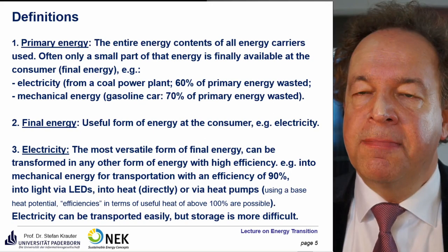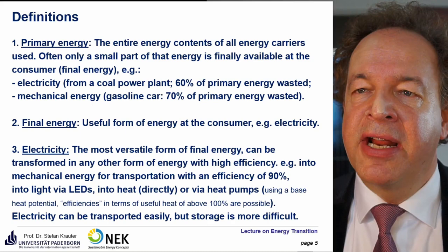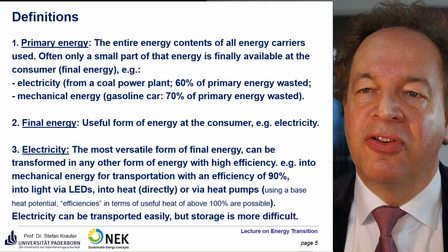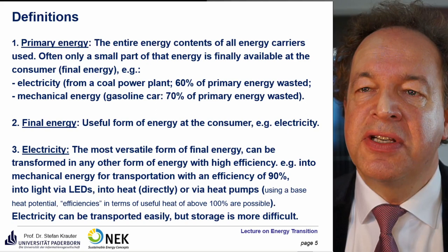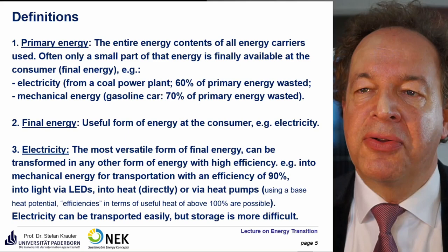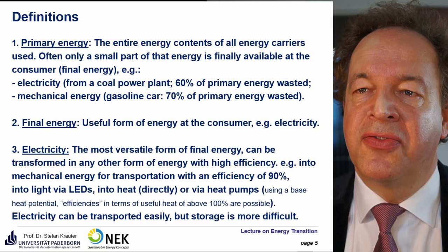Primary energy is the entire energy content of all energy carriers used. Often only a small part is finally available at the consumer — this is called final energy. For example, electricity from a coal power plant wastes more than 60% of primary energy. Driving a gasoline car wastes about 70% of the primary energy content of the gasoline.